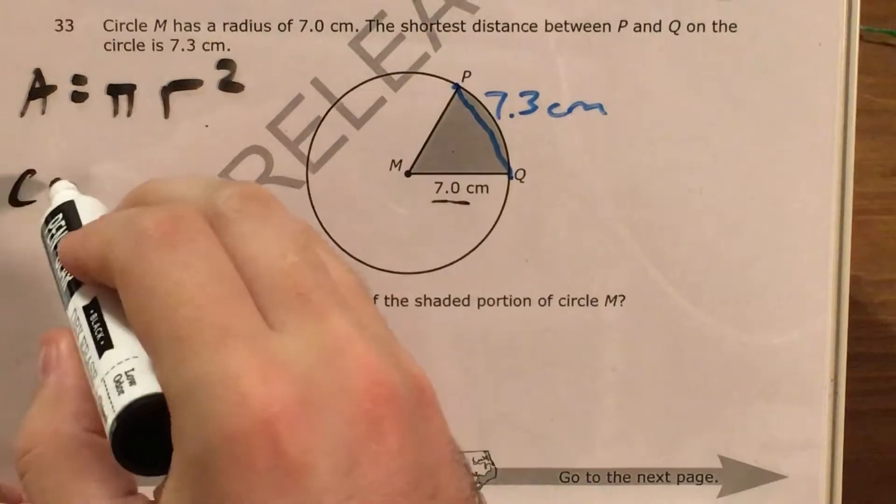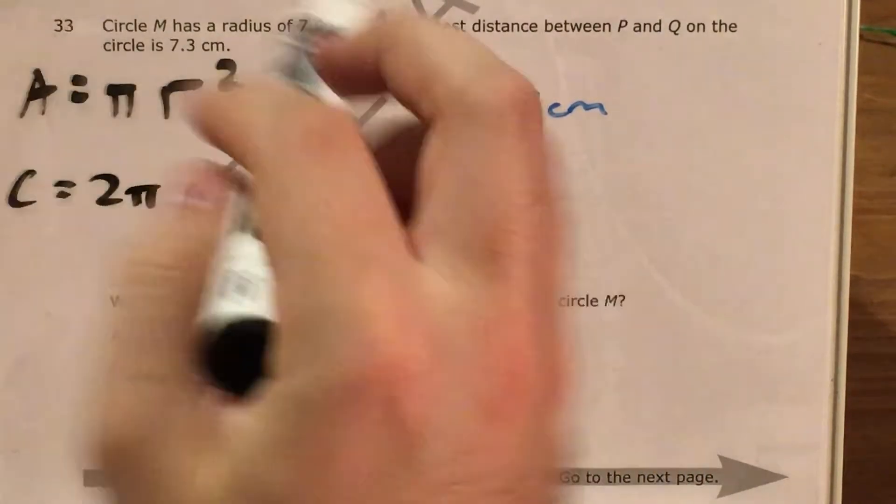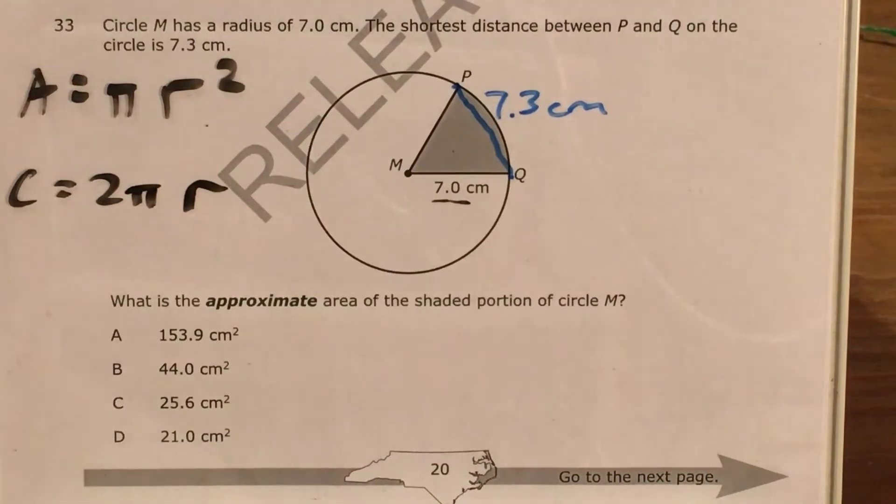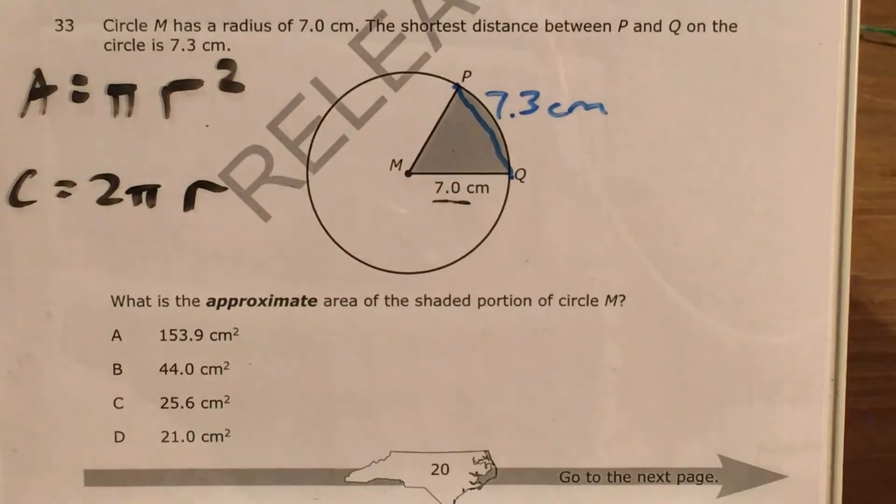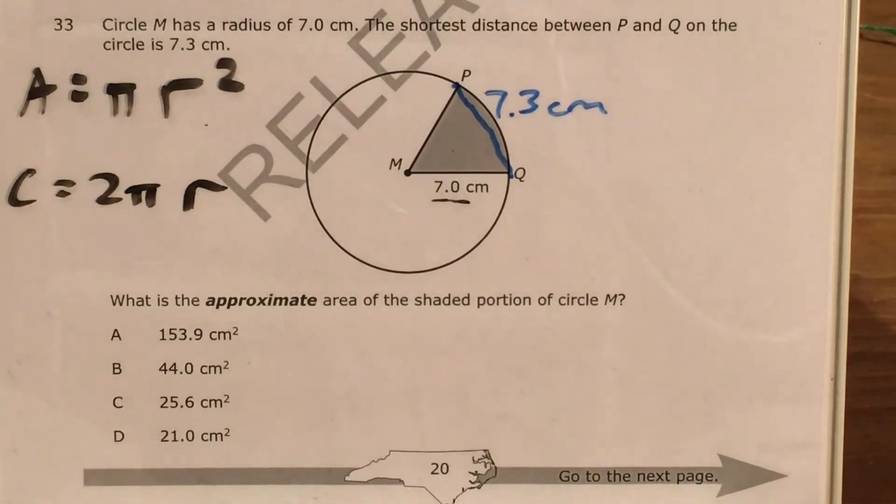And then my circumference is going to be 2 times pi times my radius. This is also known as pi times my diameter, but since the diameter is 2 times the radius, this formula is equivalent to the other one. There are two ways of saying the same thing.